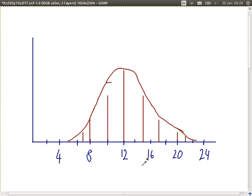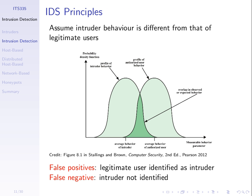Going back to the earlier slide: this was the profile of the normal user — some parameter we can measure, some behaviour like login times or files accessed. We work under the assumption that the intruder would have a different profile. We monitor what happens, compare it to the user's profile, and if they match, we assume it's not an intruder; if they don't match, we assume it's an intruder. The problems arise in that sometimes the behaviour of the intruder matches that of the normal user — there's an overlap.